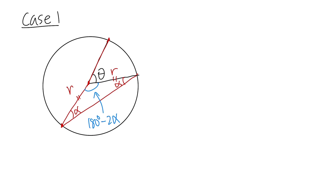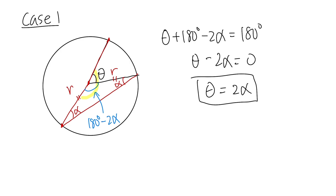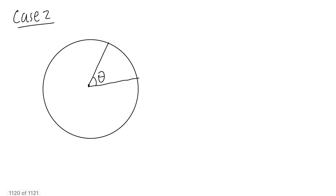Now looking at the whole straight line: theta and the blue angle form a straight line, so theta plus (180 − 2α) = 180. The 180s cancel, giving theta minus 2 alpha equals zero, meaning theta equals 2 alpha. That's Case 1 done.